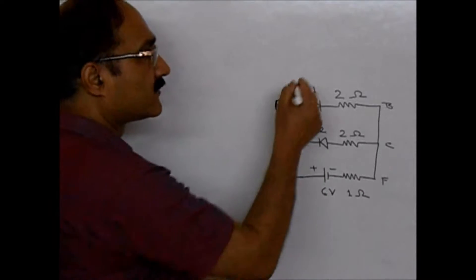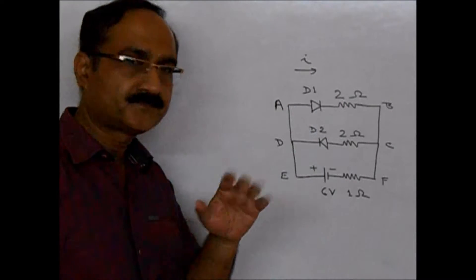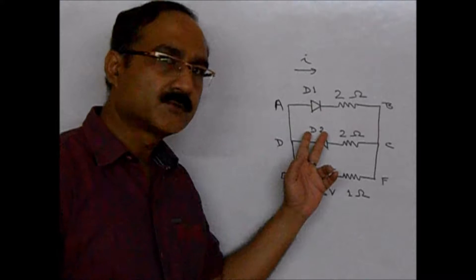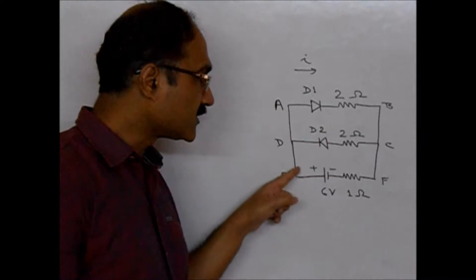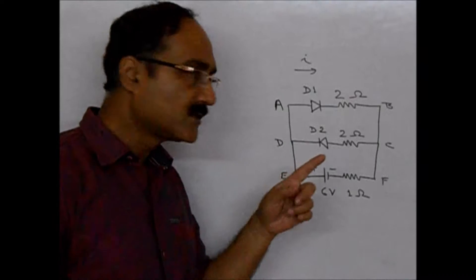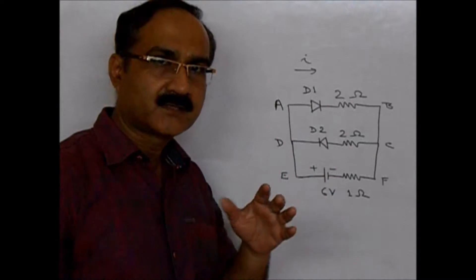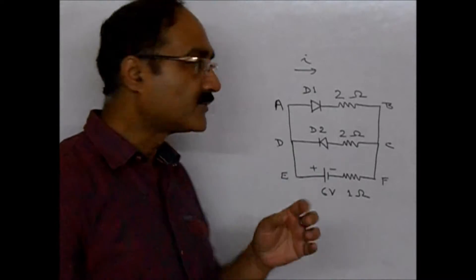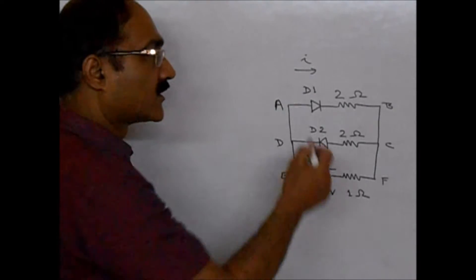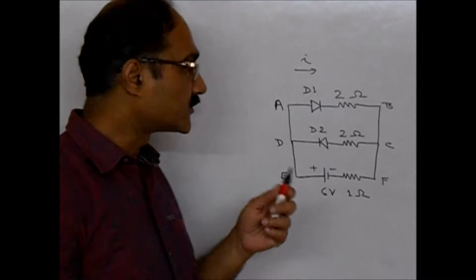Now for the diode D2, this is the first thing we should realize here. So current will flow through D1, but current will not flow through D2.